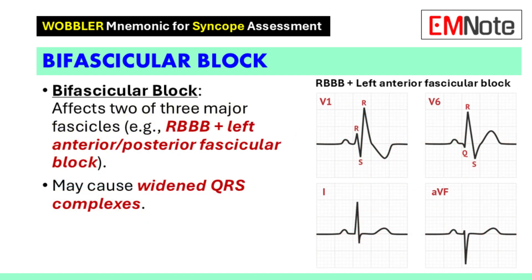A bifascicular block affects two out of the three major fascicles in the heart's conduction system. This condition commonly presents as a right bundle branch block combined with either a left anterior fascicular block or a left posterior fascicular block. The presence of widened QRS complexes may indicate this type of block.